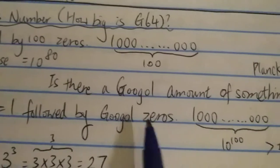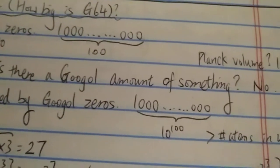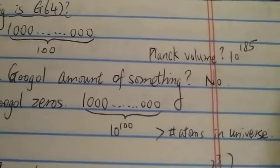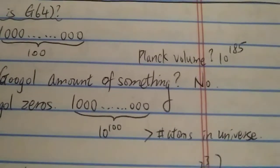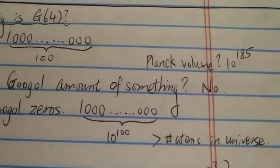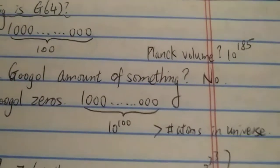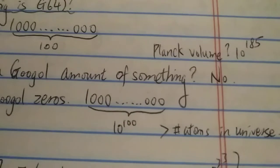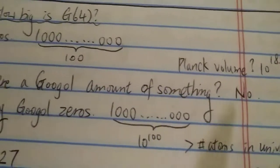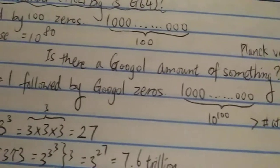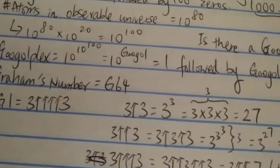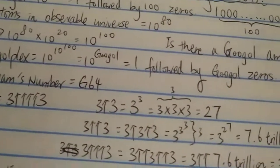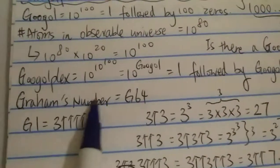So is there a Googol amount of something in the universe? No. Some people may say the number of Planck volumes in the observable universe is 10 to the 185, however the Planck volume is not a physical volume — it's not a physical object, it's just an imaginary volume. So if you only count something physical, the most you get is particles and atoms, and there are only 10 to the 80 of them.